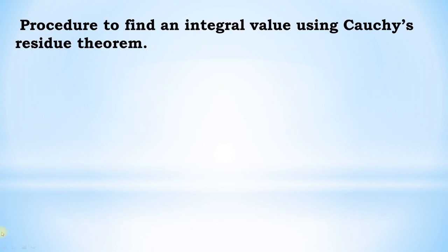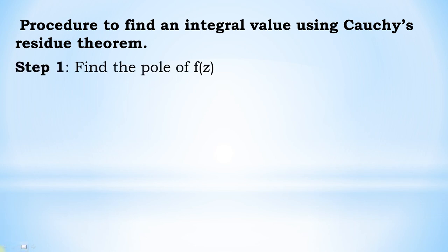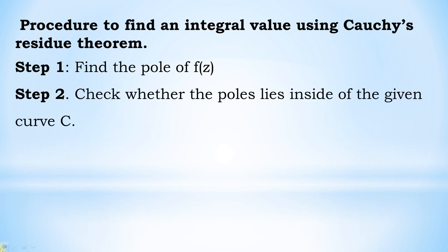Procedure to find an integral value using Cauchy's residue theorem. Step 1: first find the poles of the given function f of z. Step 2: check whether the pole lies inside the given curve C or not.